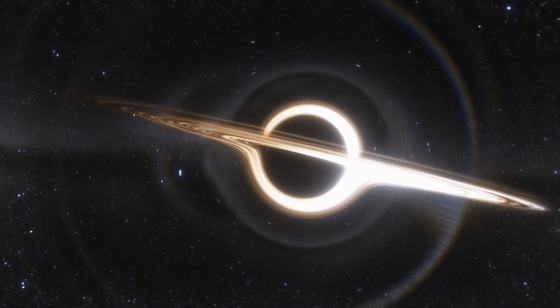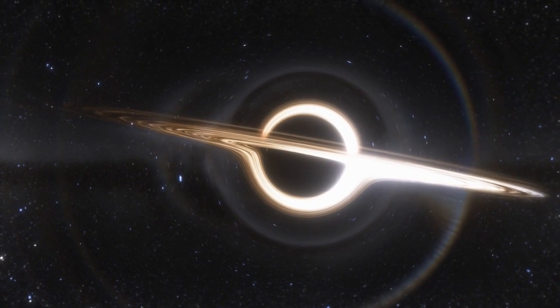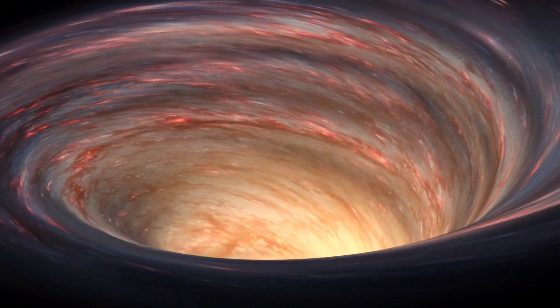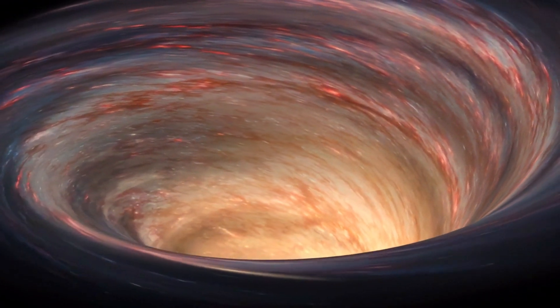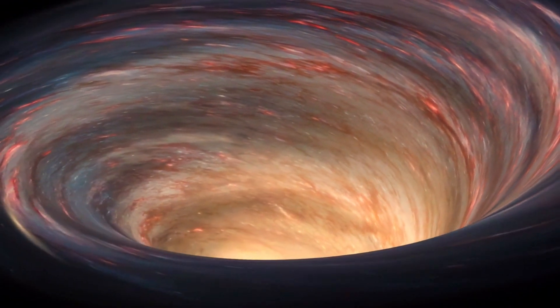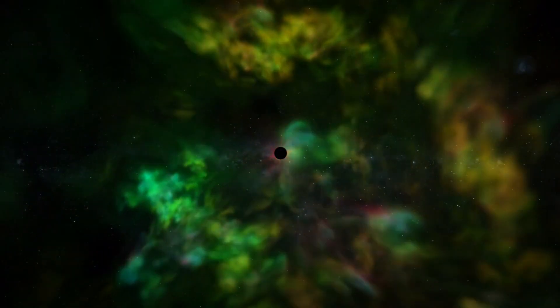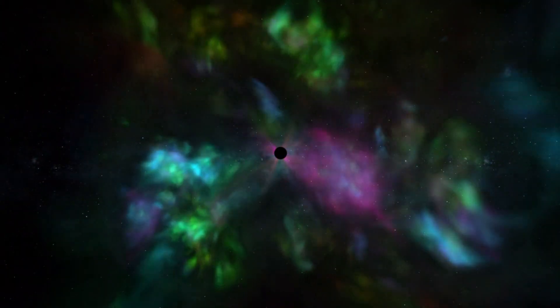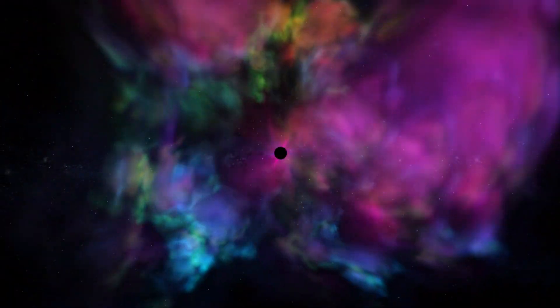TON 618 is located nearly 10.4 billion light-years away from Earth. The existence of such an ultra-massive black hole raises intriguing questions about the formation and evolution of galaxies and their central black holes. Its sheer mass suggests that black holes can grow to ultra-massive proportions under the right conditions and studying TON 618 can provide clues about those conditions and processes.